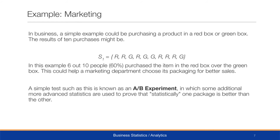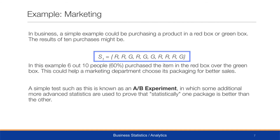Let's take a look at a marketing example. In business, we can have a simple example of purchasing a product in a red box or a green box. The results of 10 purchases could be a sequence of red and green choices. In this example, 60% of the people — six out of 10 — purchased the item in the red box over the green box. Knowing this could help a marketing department choose its packaging for better sales.